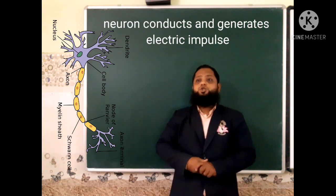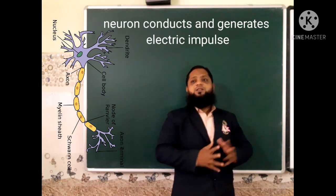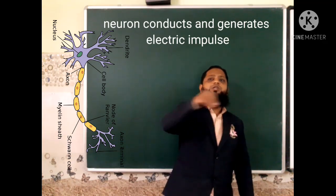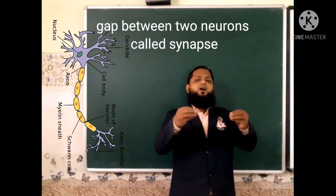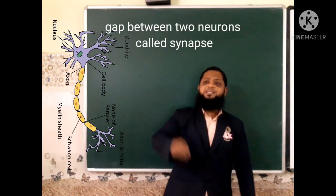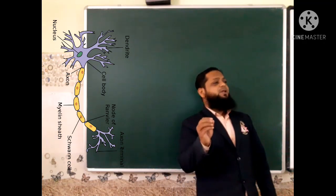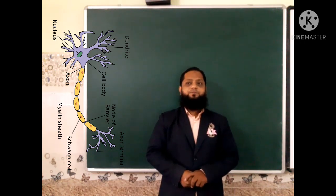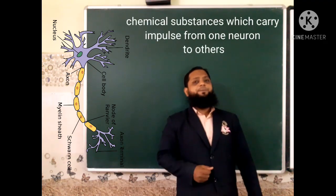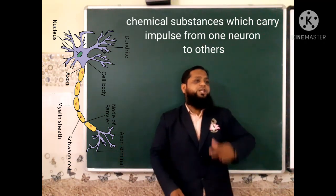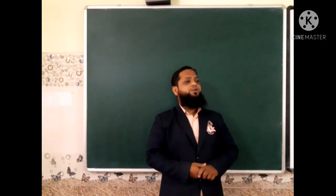The main function of the neuron is to generate electrical impulses and to conduct them from one neuron to another. There is a gap between two neurons — they are not directly connected. This gap is called the synapse. The synapse is filled with neurotransmitters, which are chemical substances responsible for carrying electrical impulses from one neuron to the next. This covers the structure and function of nervous tissue.